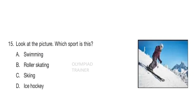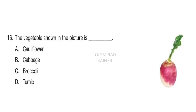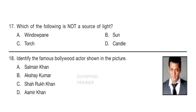Question 15: Look at the picture. Which sport is this? The answer is option C — Skiing. Question 16: The vegetable shown in the picture is... Answer is option D — Turnip. Question 17: Which of the following is not a source of light? Answer is option A — Window pane. Question 18: Identify the famous Bollywood actor shown in the picture. Answer is option A — Salman Khan.